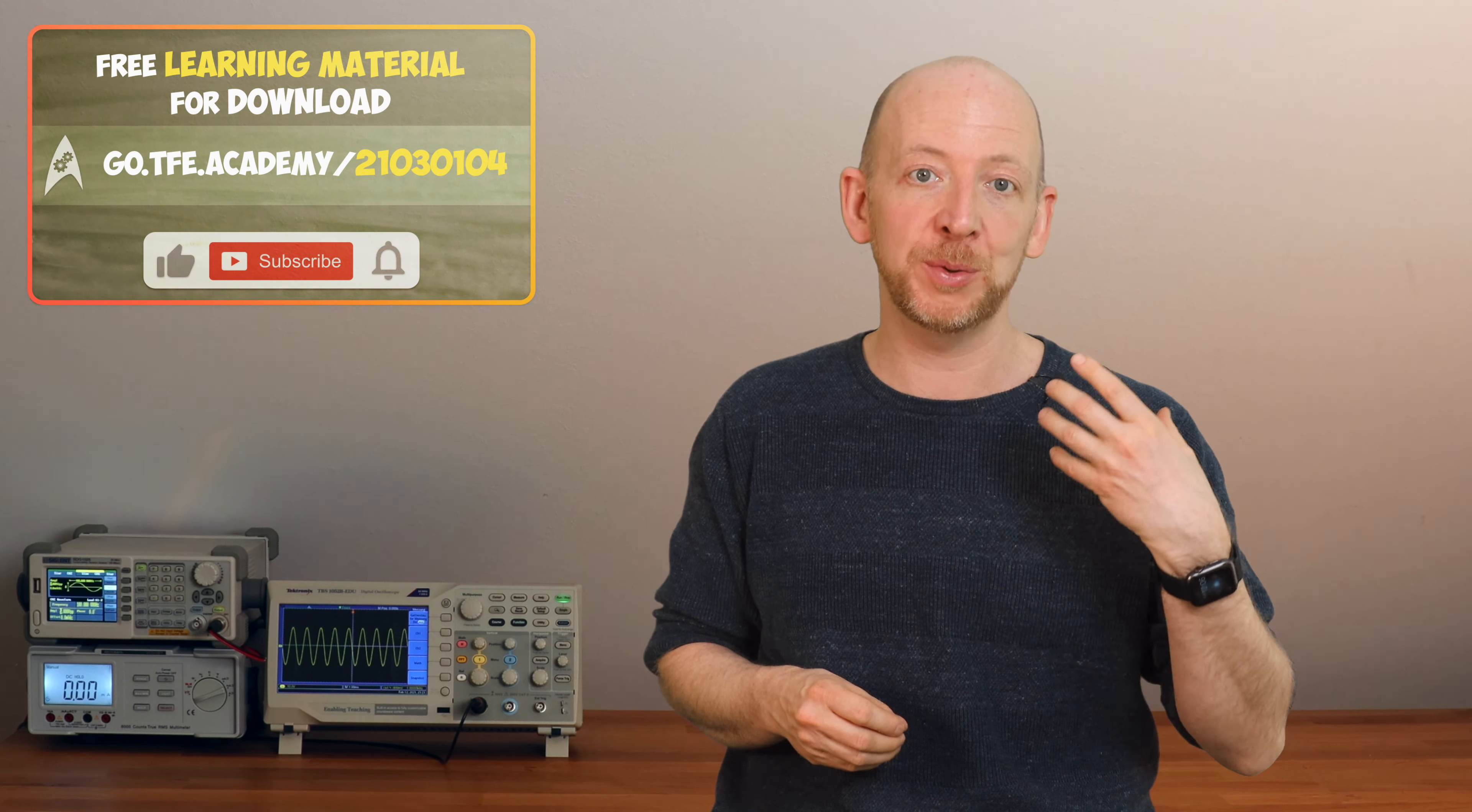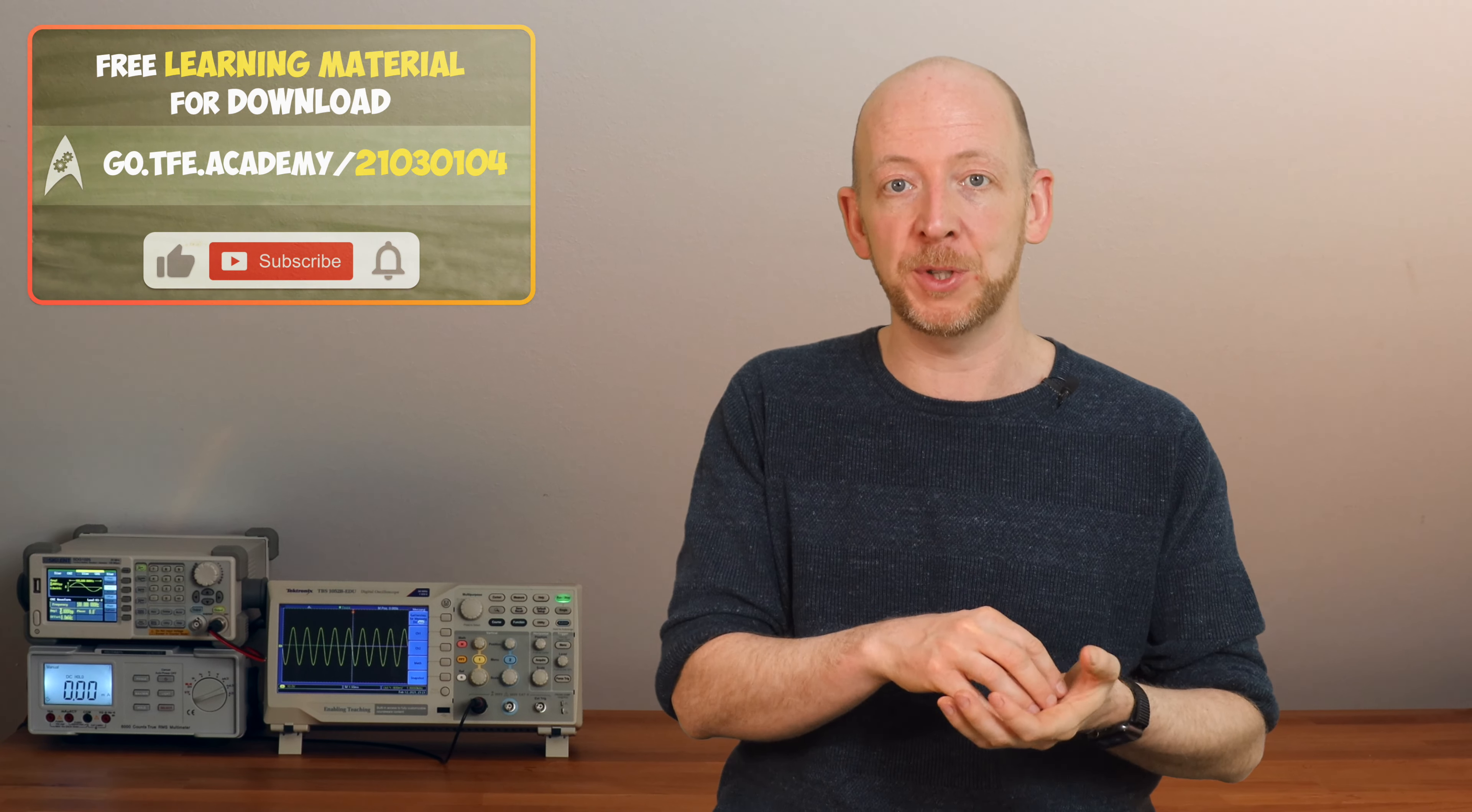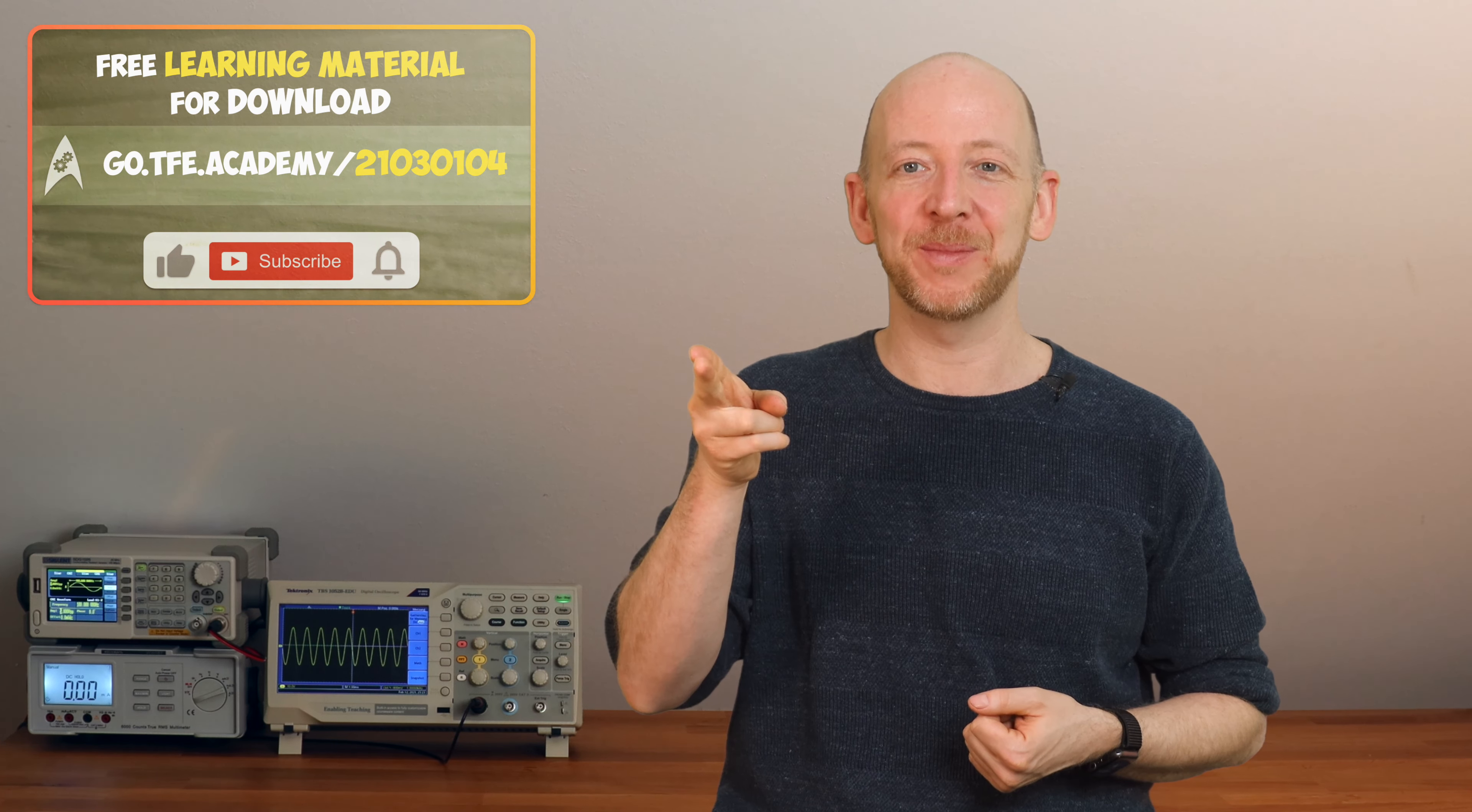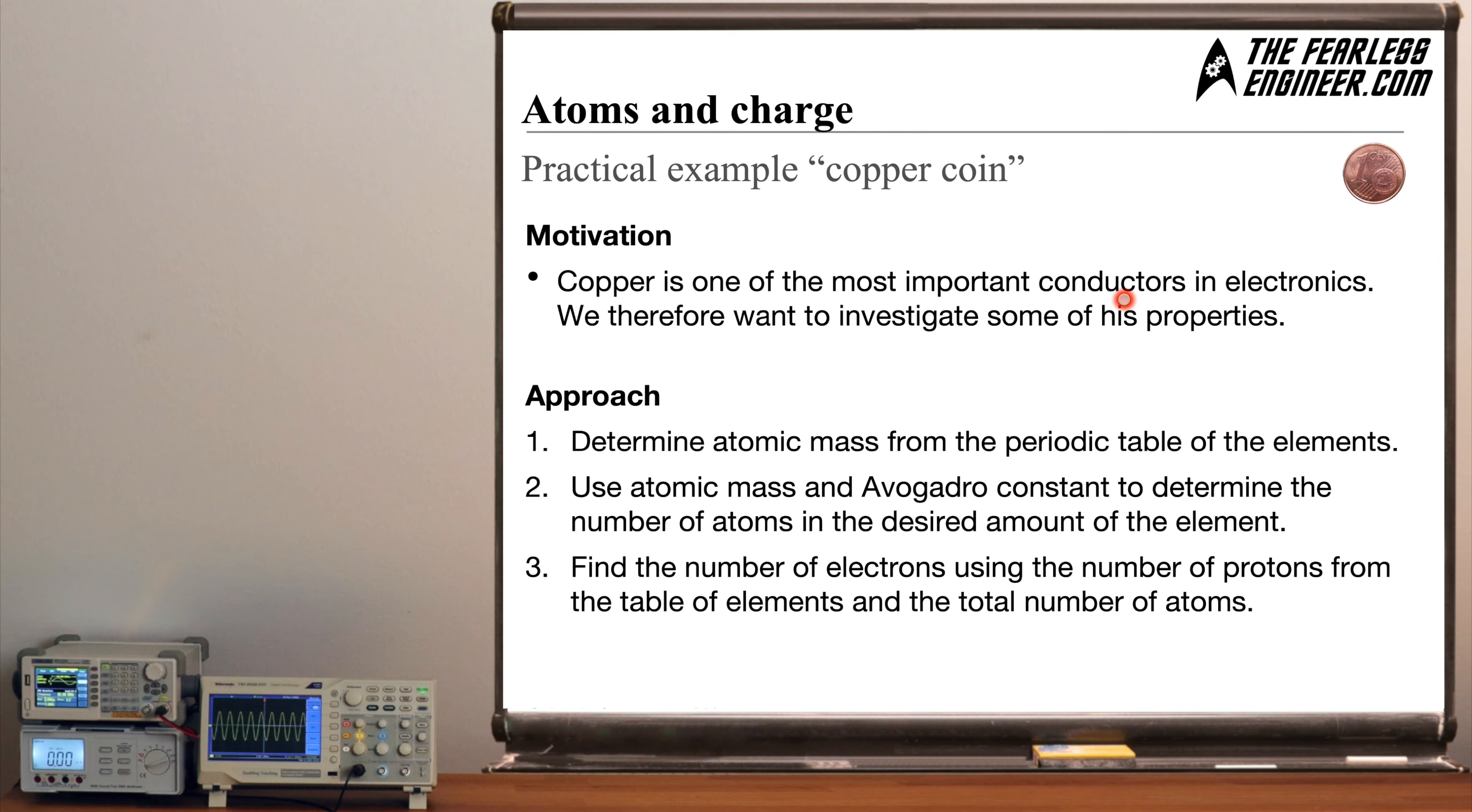We do this because copper is one of the most important materials in electronics and you should know at least some basic properties of it. In order to do so I will show you how to use the table of elements properly to find out the atomic mass of an element. Also I will explain to you what the unit mole is all about and also the Avogadro constant which are the tools you will need to solve these small exercises here. My name is Andreas from the Phyllis Engineer and here we go.